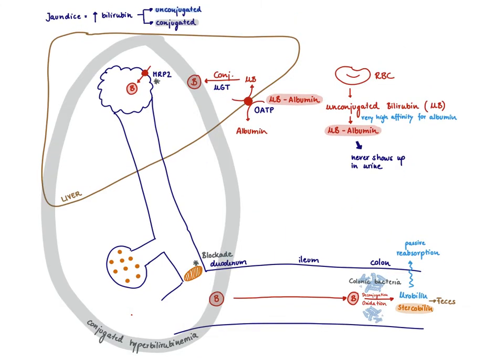Now you can also have conjugated hyperbilirubinemia. What does that mean? That means the bilirubin got conjugated, but now there is a problem. Either it didn't get into the canaliculi, so you have a problem with MRP2 and it gets back out again, or there's a gallstone, there's a blockade.